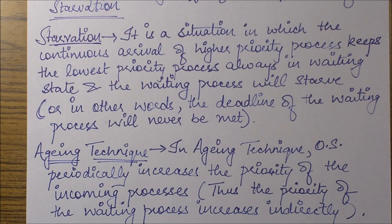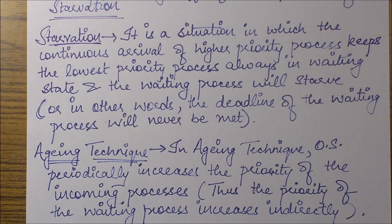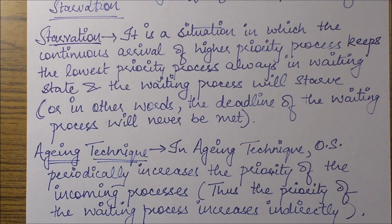In general, the process which is assigned a higher priority value actually has a lower priority. For example, if a process has a priority value of 5 and another has a priority value of 1, then the process with priority value 1 is taken as the highest priority process, and the one with 5 is taken as the least priority process. The aging technique states that after some time, the OS will start increasing the value of the priority of the executing processes.